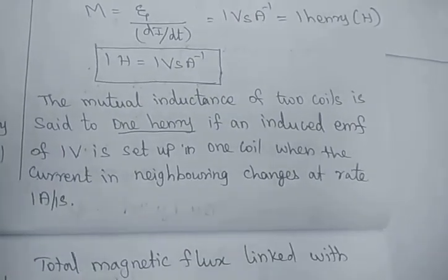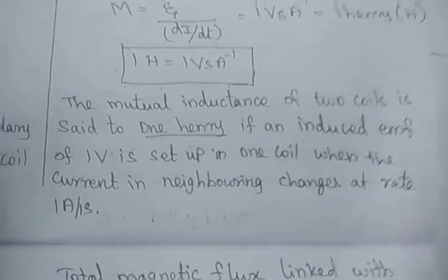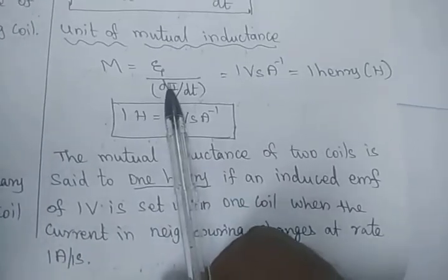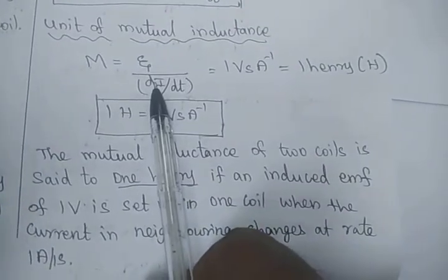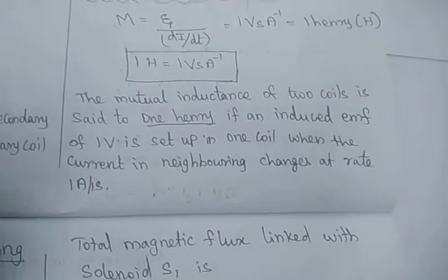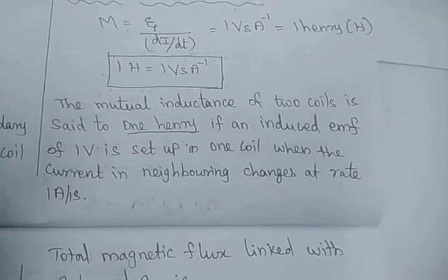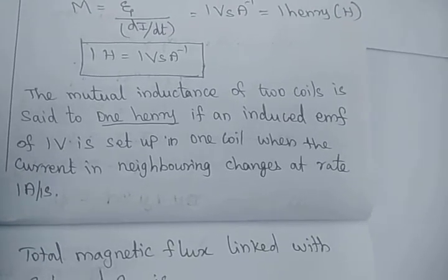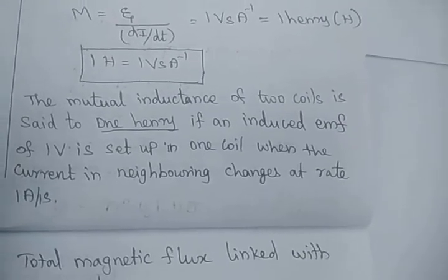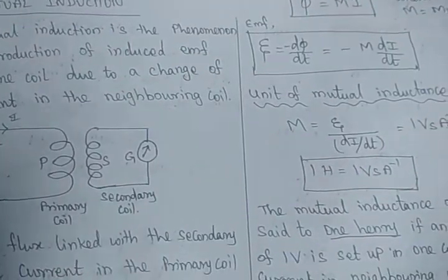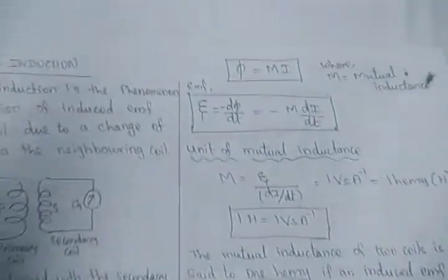The mutual inductance of a coil is said to be 1 Henry if an induced EMF of 1 volt is set up in one coil when the current in the neighboring coil changes at a rate of 1 ampere per second. So if the EMF in the secondary coil is 1 volt with that rate of change of current, that is 1 Henry. Change in current in the primary coil will induce EMF in the secondary coil — that is mutual inductance.